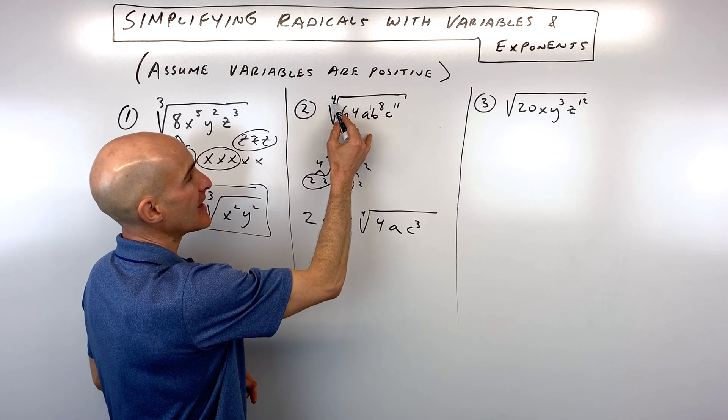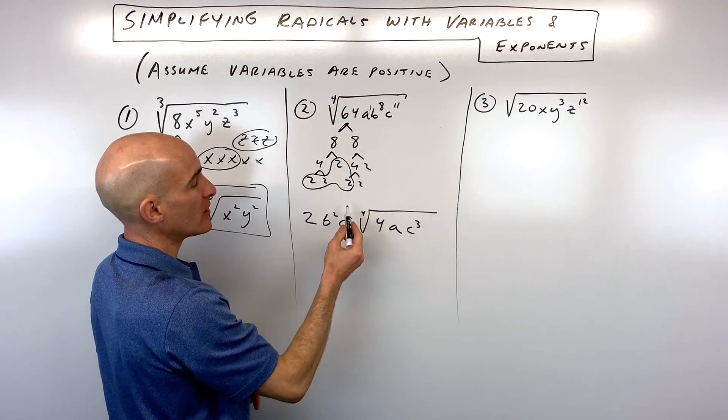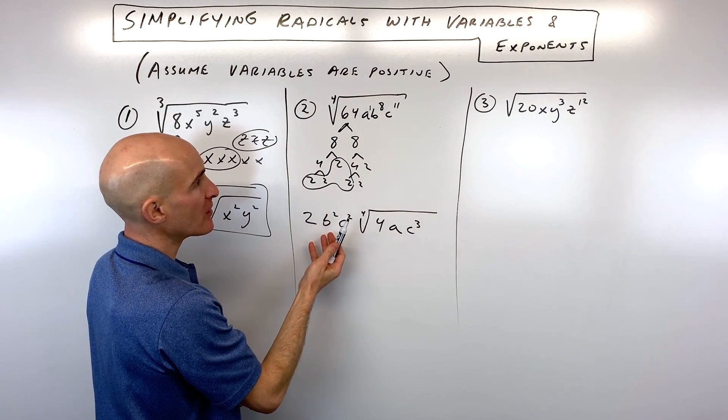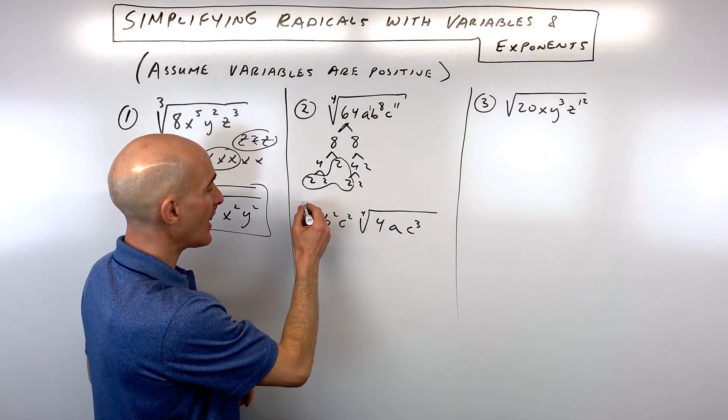So you just take that index here, see how many times it goes into the exponent. That comes out in front of the radical, and whatever's left over stays underneath, and you've got it.